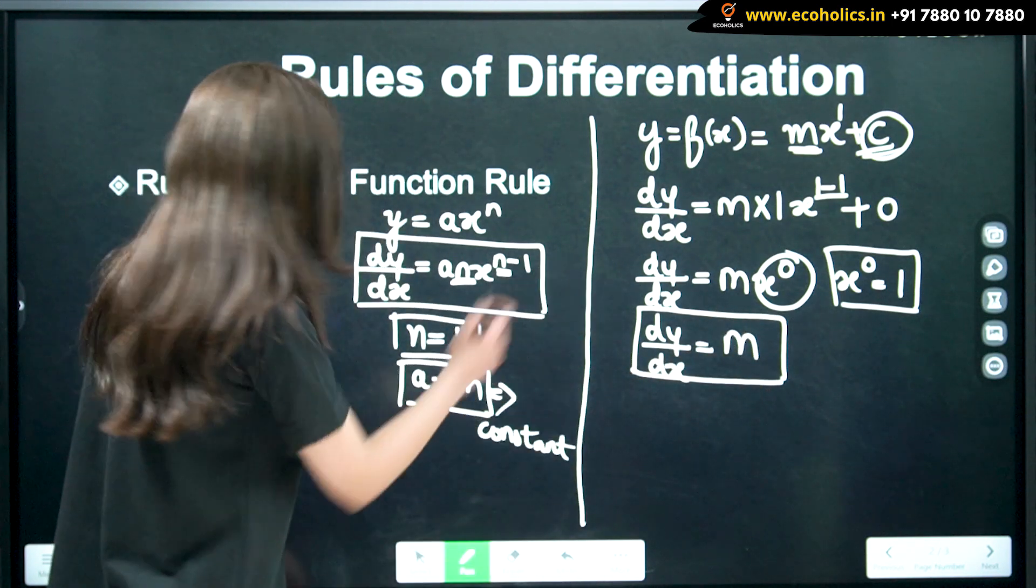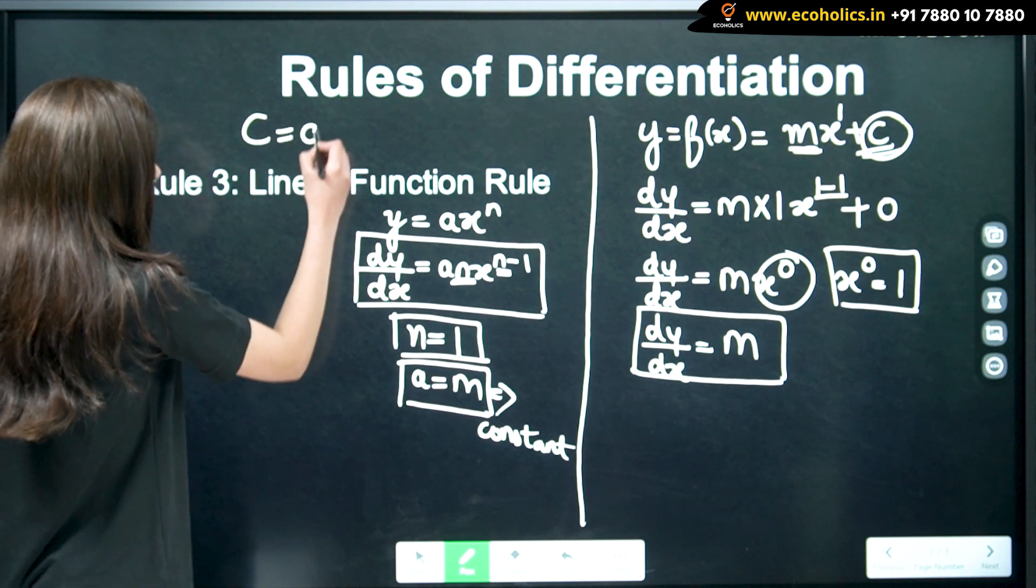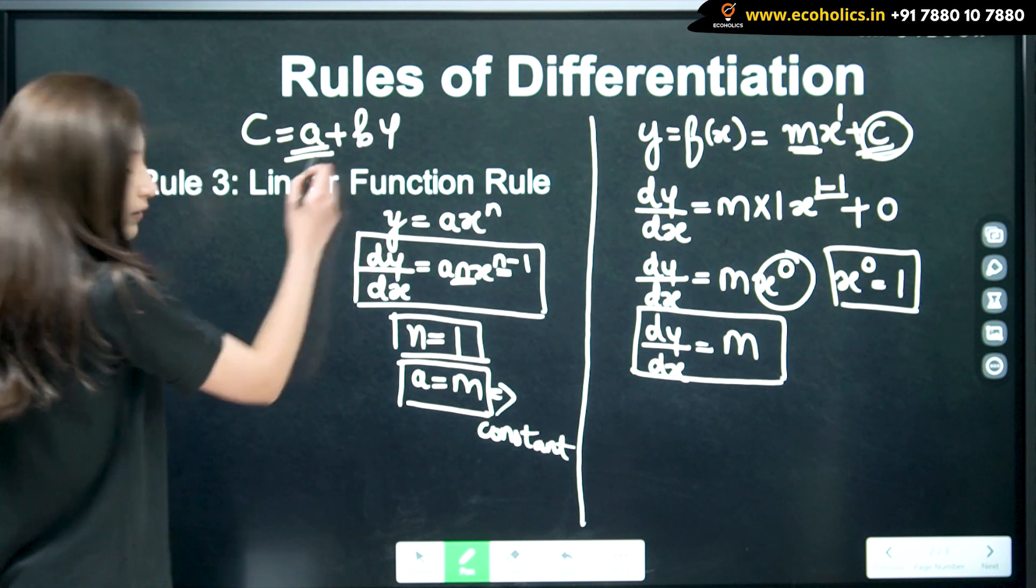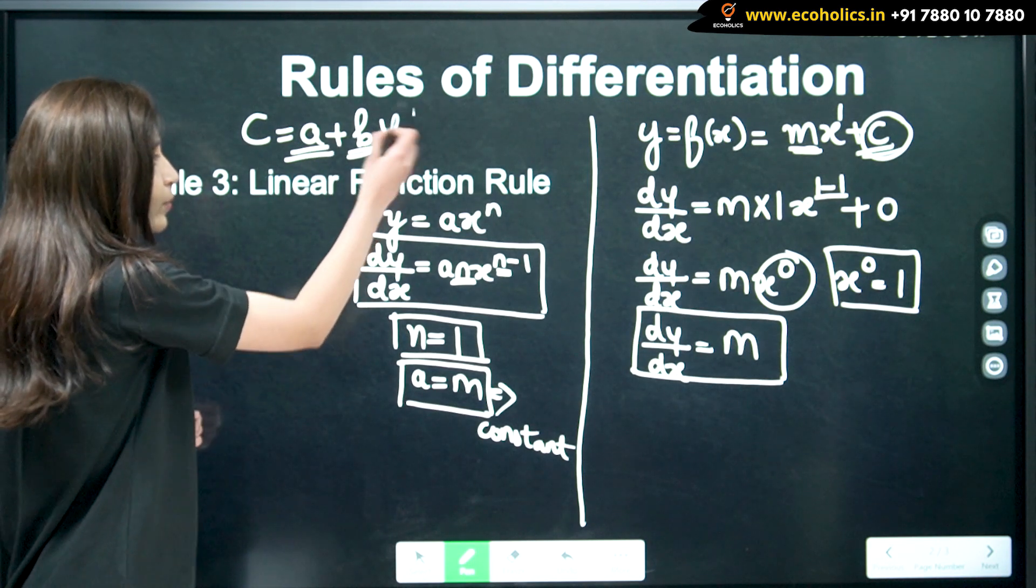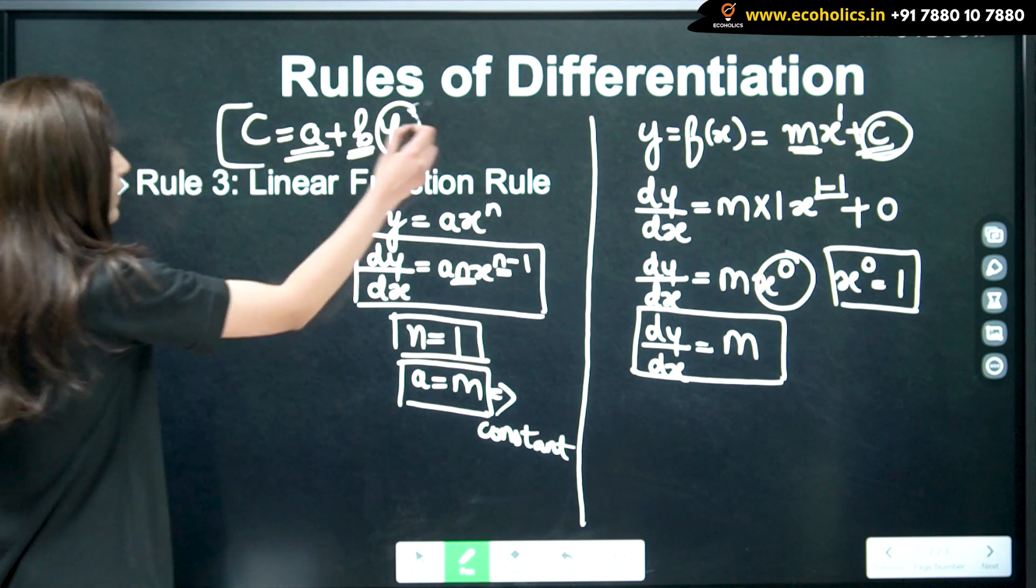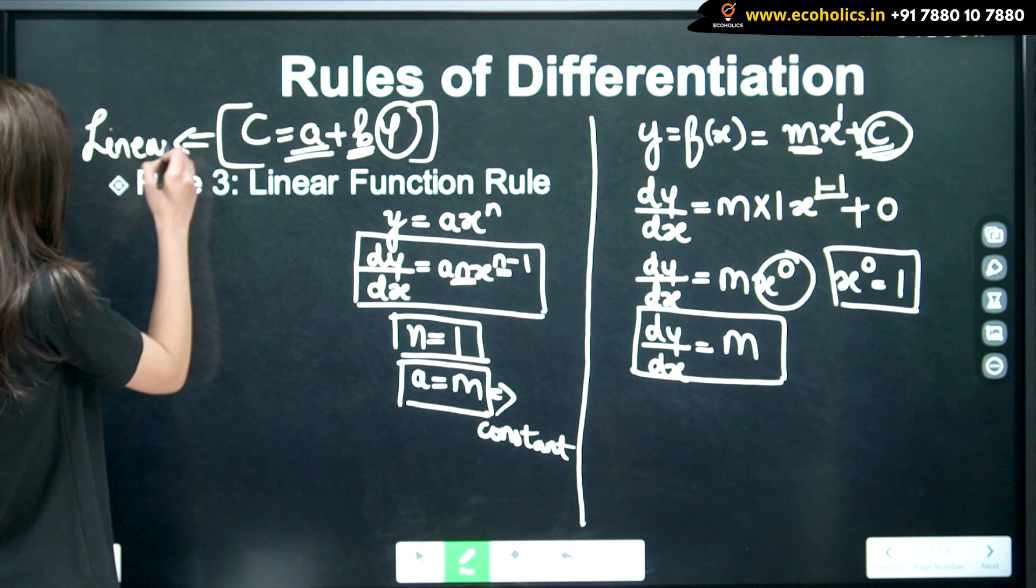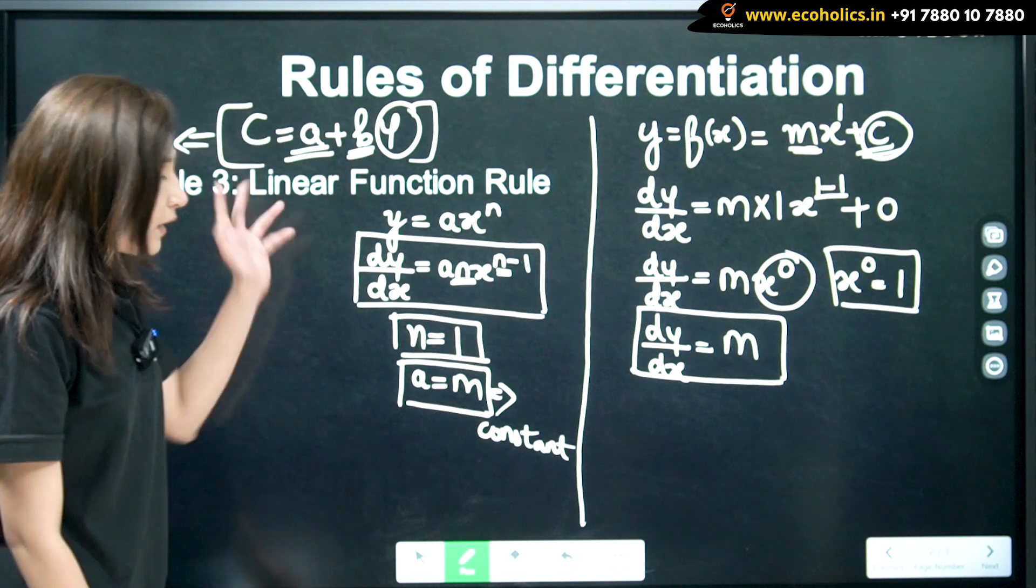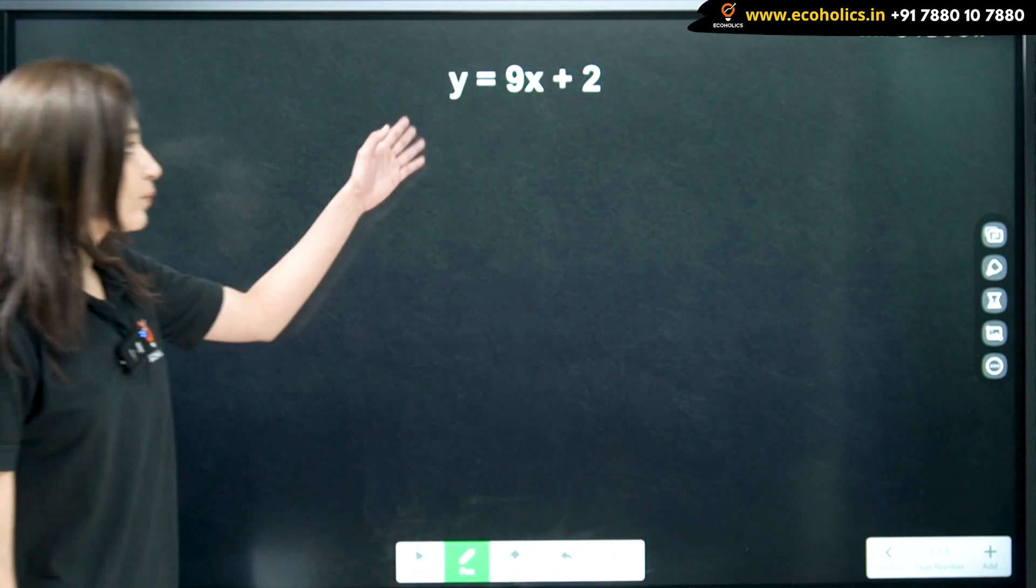Now, we have seen that a consumption is in the linear form where a, a is our autonomous consumption, b is our marginal propensity to consume and y is our national income. So, this is in the linear form. So, this is one of our example. Now, let's see how to calculate this.